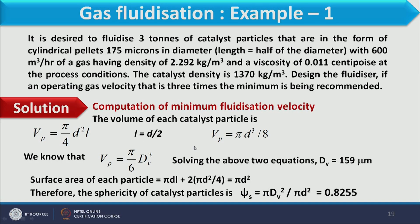The volume of each cylindrical catalyst particle is V_p = (π/4)d²l, where l = d/2, giving V_p = πd³/8. To handle the non-spherical shape, we calculate the volumetric diameter d_v by equating the volume of a sphere to the particle volume: (π/6)d_v³ = V_p. Solving gives d_v = 159 micrometers.